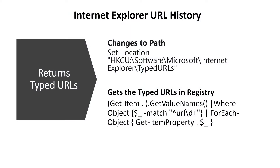In this graphic, you see a way to get websites that a user visited. The first example sets the directory to the registry path, and the second one displays the websites. Determining browser history is useful for several cases, such as gathering information on a missing child to see which websites have been recently visited. Website histories can be deleted in a browser but can remain as registry entries. You can find commands and scripts like these with a simple internet search.